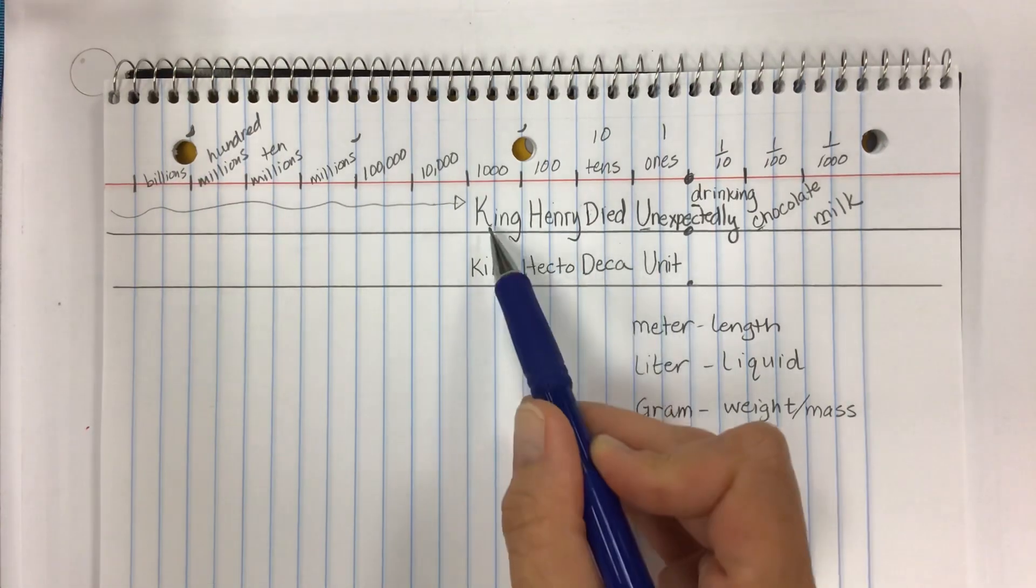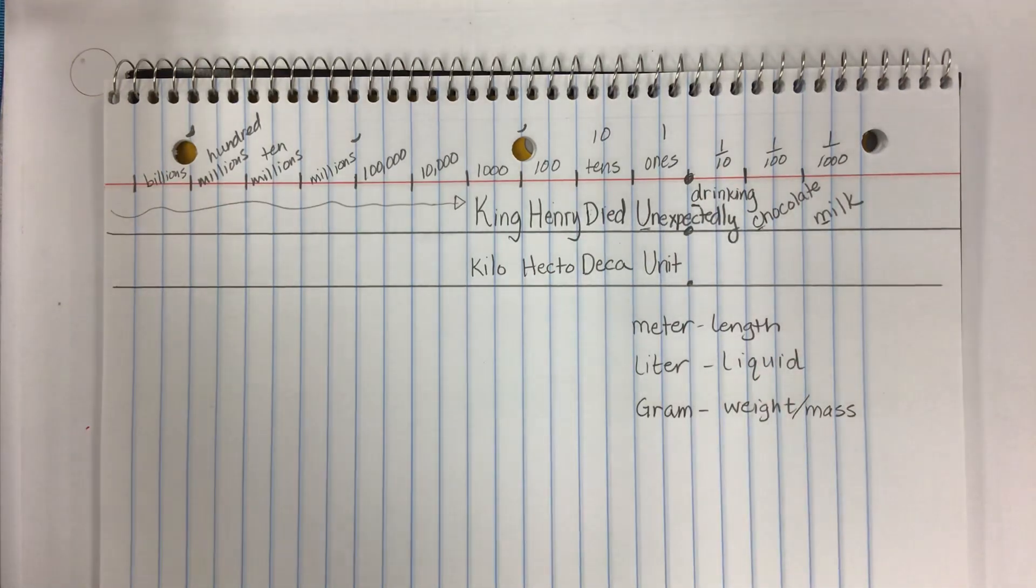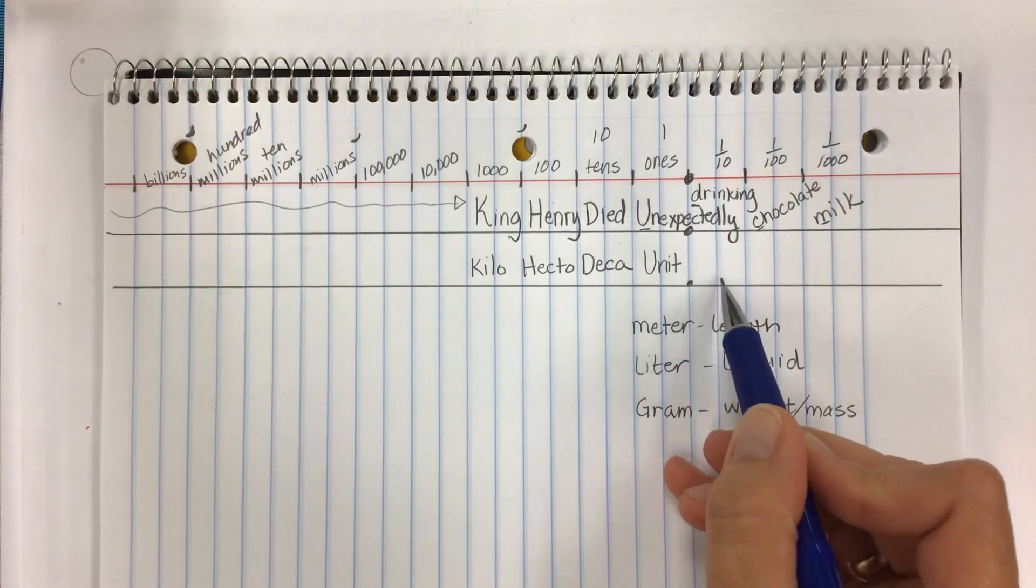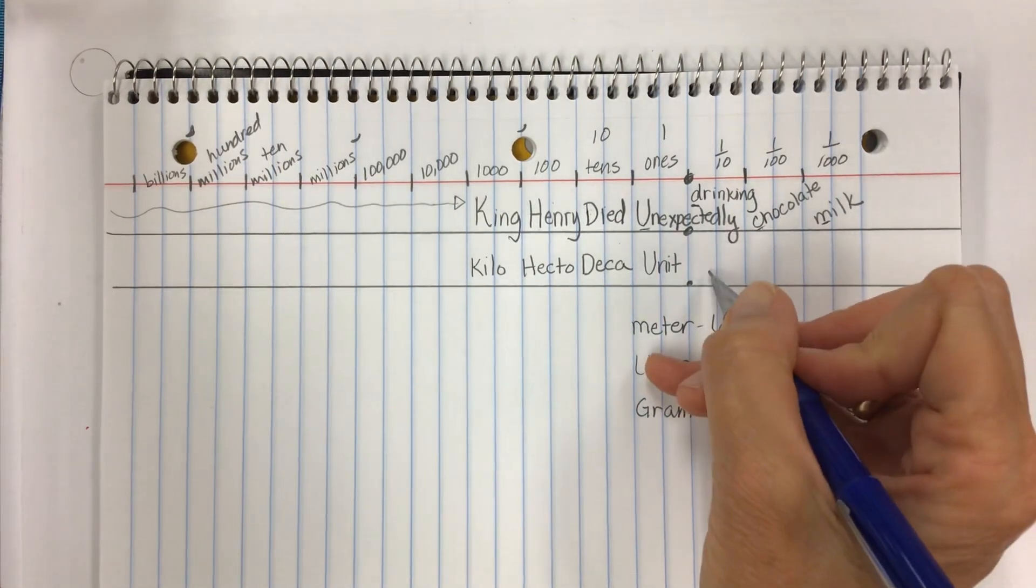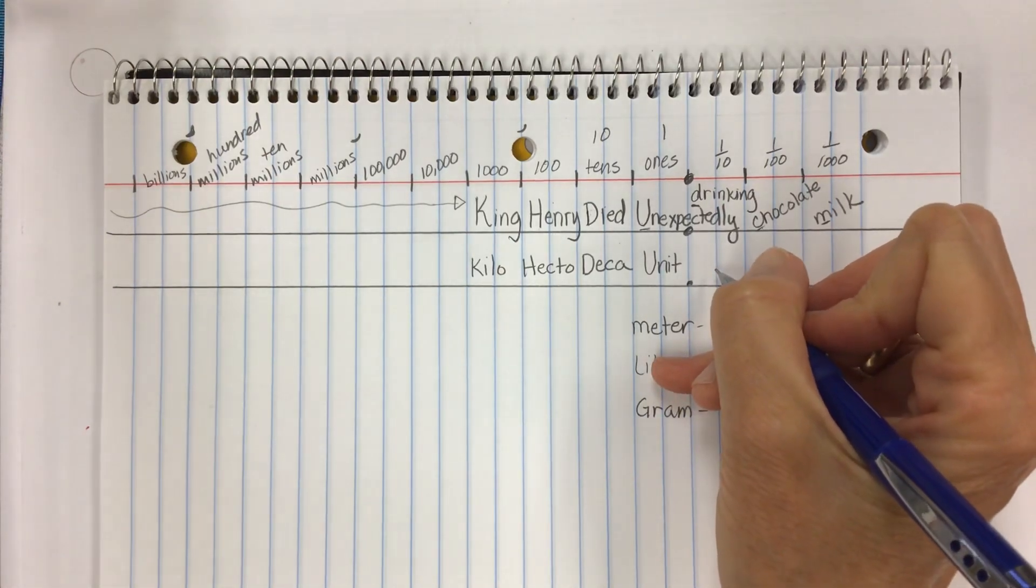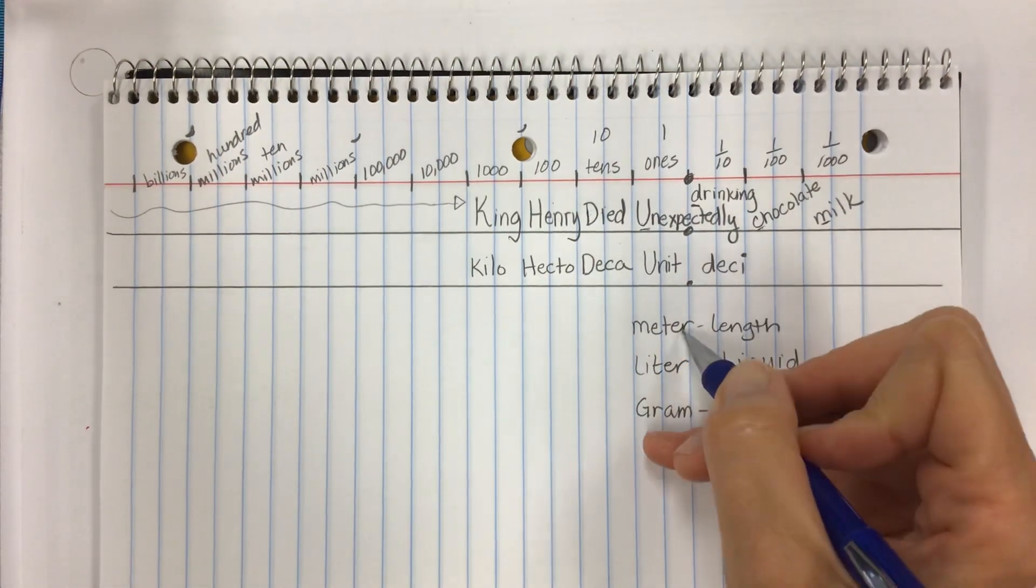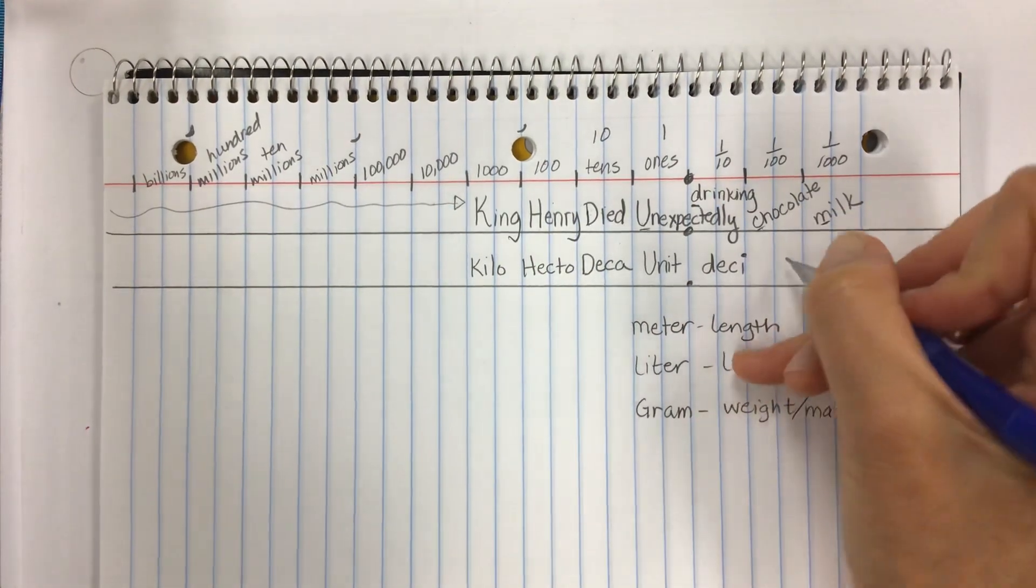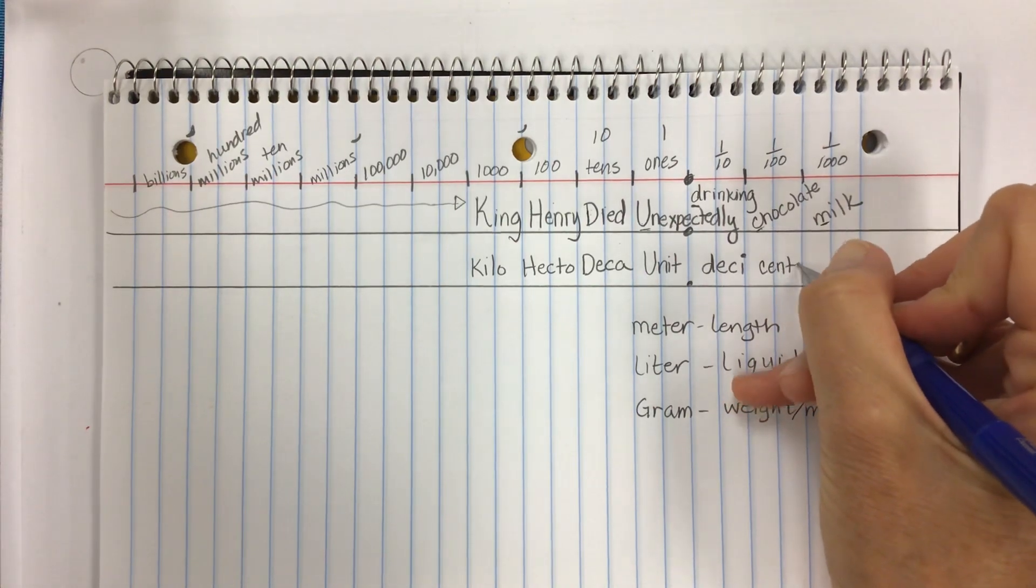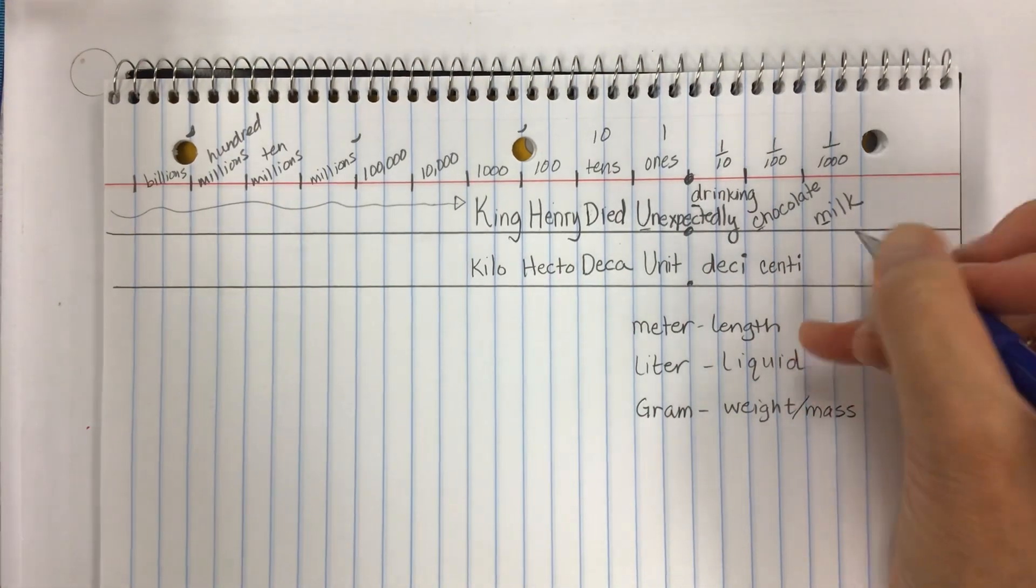Now let's get back to our prefixes. So kilo, hecto, deca, and unit are for King Henry died unexpectedly. So drinking chocolate milk, I use small letters over here because these are so small, these amounts are less than one. Remember if this is one, this is one tenth of one, this is one one hundredth of one, this is one one thousandth of one. So what would go here, this would be the deci. So I'm going to put D-E-C-I. It could be a decimeter or a deciliter or a decigram. The C in chocolate is going to give us the centi, centimeter, centiliter, centigram.